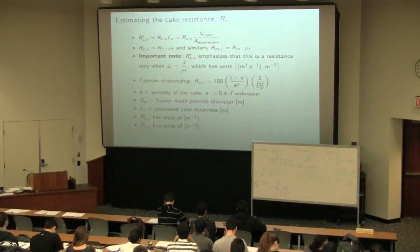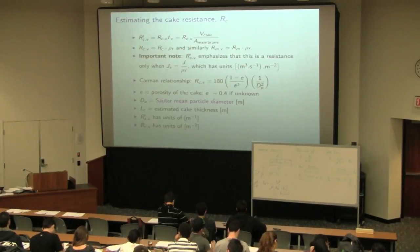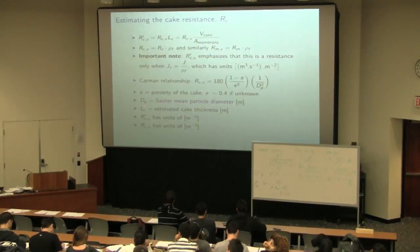The Sauter mean diameter is, even though your particles may not be spherical, you can calculate the diameter of a particle that has the same surface to volume ratio as a sphere, and then what would that diameter of that sphere be to get the Sauter mean particle diameter.